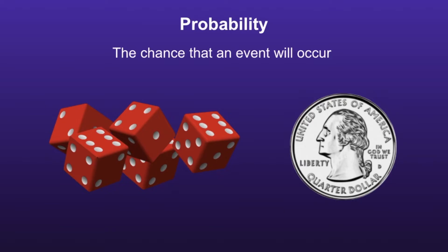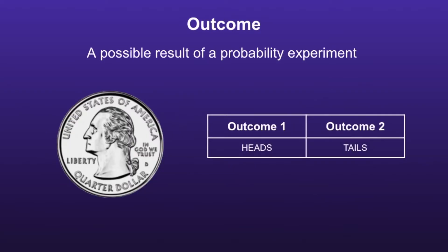Probability: the chance that an event will occur. Outcome: a possible result of a probability experiment. If I was to toss a coin, there would be two possible outcomes — either the coin would land on heads, or the coin would land on tails.